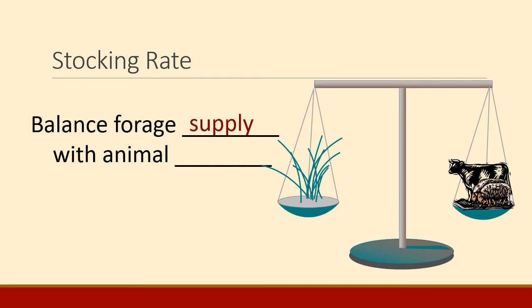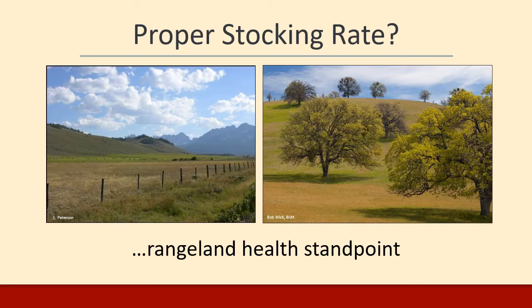We're going to look at the supply — the amount of forage the land produces — and in stocking rate examples, we'll calculate that and get a good idea of how many pounds per acre a piece of land produces. Then we're going to look at how much animals eat — the forage demand — how much cows, sheep, goats, horses, elk, whatever's grazing out there need to be sustained. A proper stocking rate is important because it affects both rangeland health and animal production and economics.